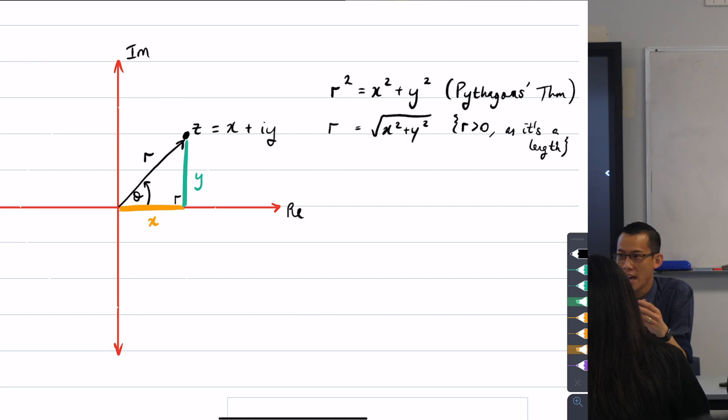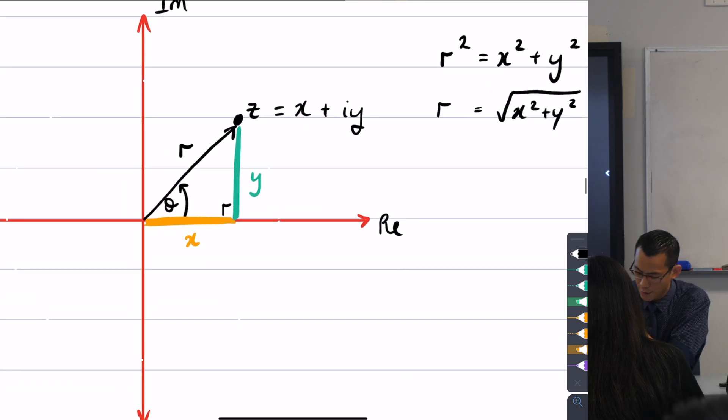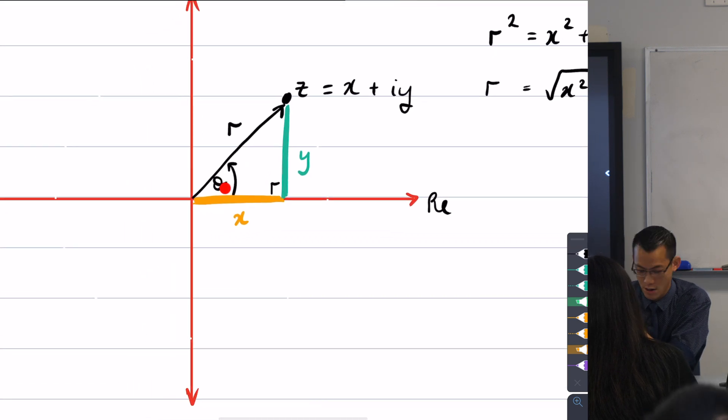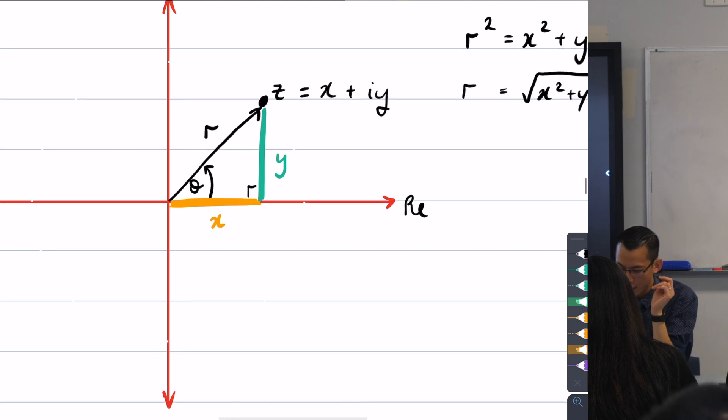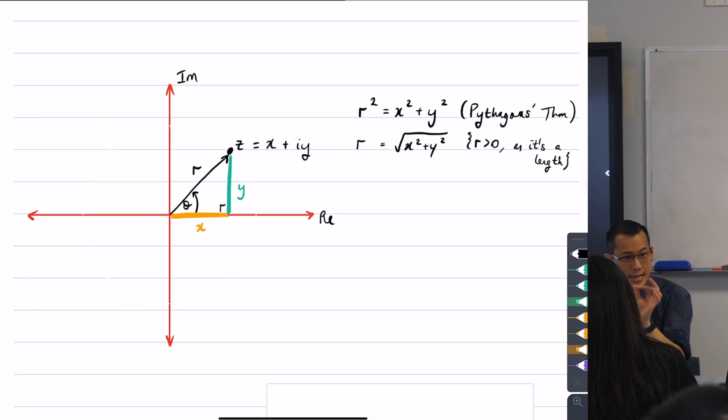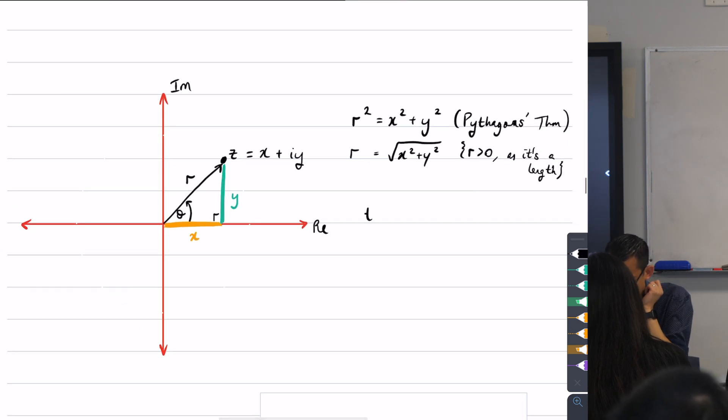If you have a look at theta, and you know x and y, it's super tempting to use a particular trigonometric ratio to get directly to theta. Which is the first ratio that jumps to mind? Hopefully, your mind went to tan first, right? Because look, if theta is the angle I'm interested in, then y is opposite, and x is adjacent. So opposite over adjacent is tan.